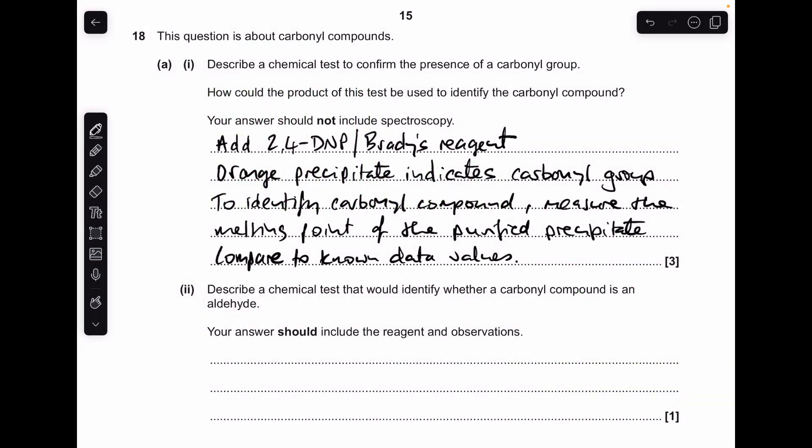So the test to confirm the presence of the carbonyl group: you'd add 2,4-DNP or Brady's reagent and an orange precipitate produced indicates a carbonyl group's present. How would you identify the carbonyl compound but not use spectroscopy? You would measure the melting point of the purified precipitate and compare to known data values.